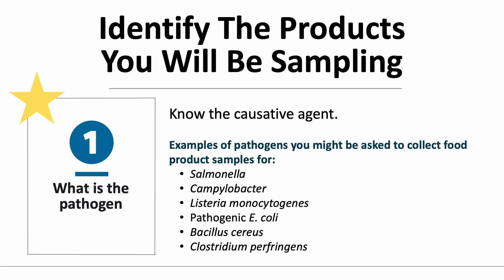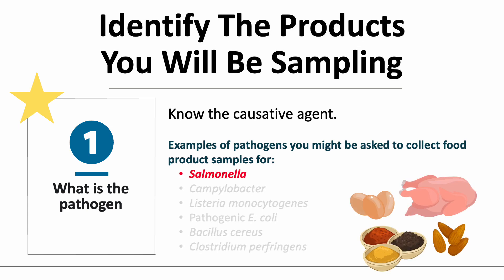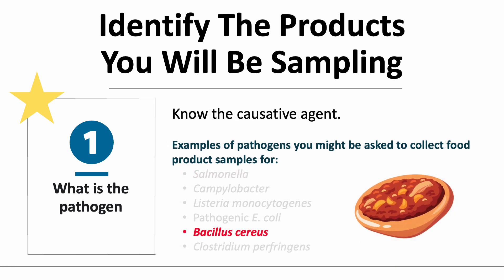Different pathogens may be associated with certain food products. For example, Salmonella is commonly associated with poultry, eggs, fresh produce, and dry foods such as nuts, seeds, and spices. And Bacillus cereus is commonly associated with food that may be stored at inappropriate temperatures, allowing for B. cereus growth, such as refried beans.